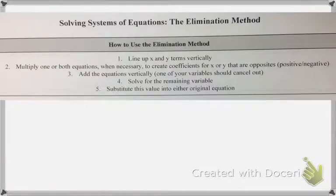You multiply one or both equations when necessary to create coefficients for x or y that are opposites. This is a really important step because if the terms are opposites and you add them together, they're going to cancel out or eliminate. And by opposites, I mean one is positive and one is negative. So you could have positive 3y, negative 3y, or positive 5x, negative 5x.